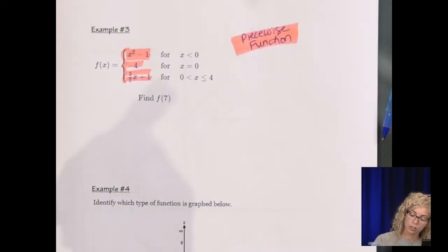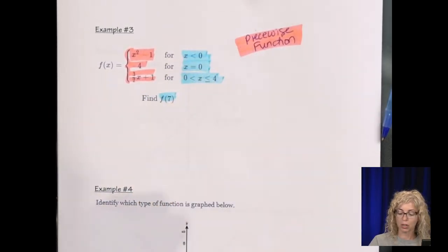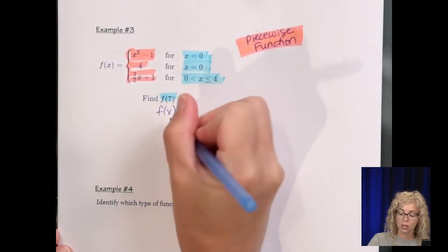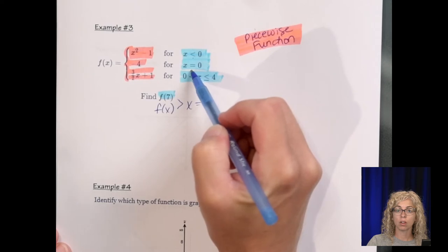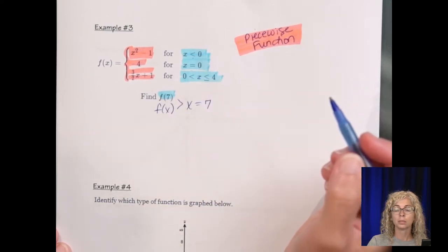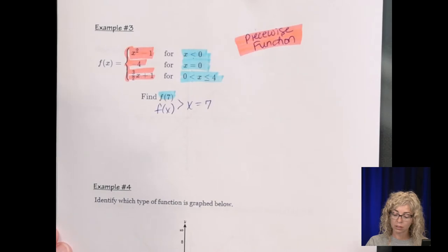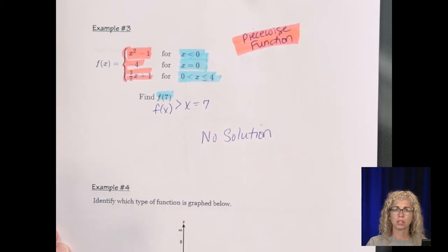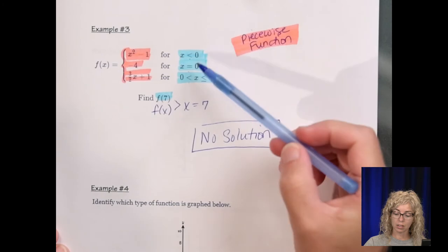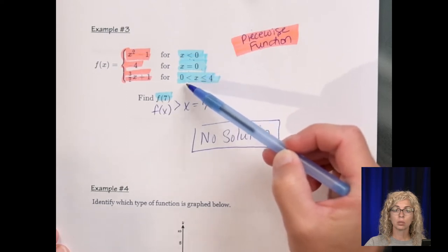Find f of 7. Well, then you need to look at f of 7. So if I'm finding f of 7, I need to look here at the intervals. Remember, because it's usually f of x. So this is saying x equals 7. Find y. 7 is not less than 0. 7 is not equal to 0. And 7 is not between 0 and 4. So for this, there is no solution. I wonder if there was a typo.